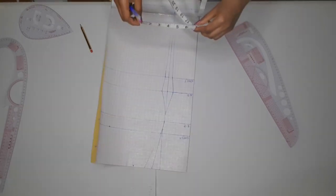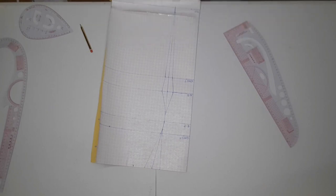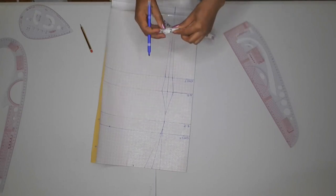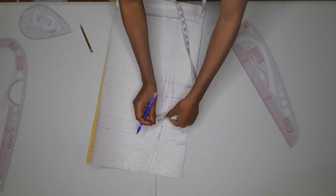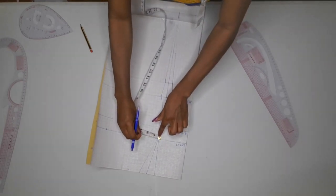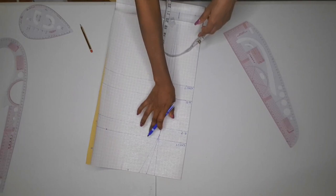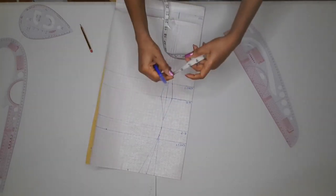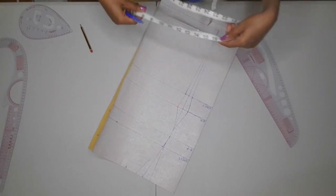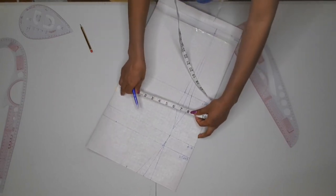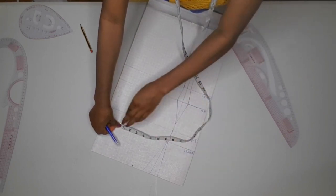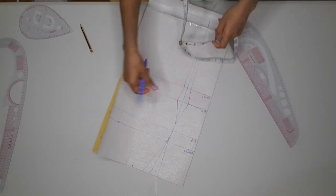The next thing is to transfer chest measurement. Take the circumference of your chest divided by 4, plus whatever you have in between this dart. Measure what you have in between that tiny part, plus 1 inch to join the 2 darts together, plus another 1 inch to join the front to the back. Mine gives me 11 inches and that is what I'm marking on the chest line.